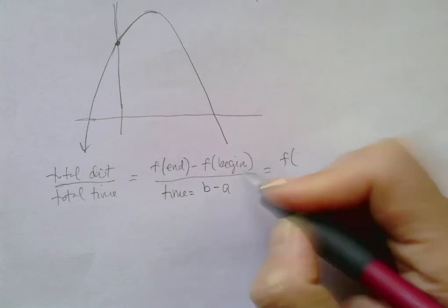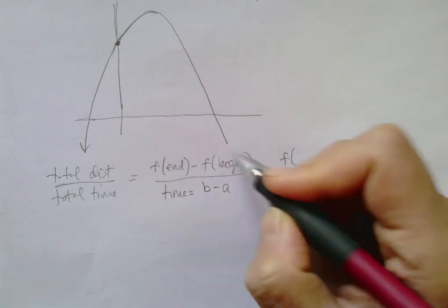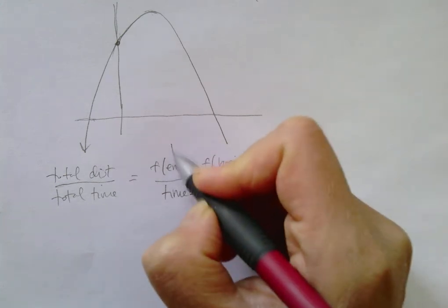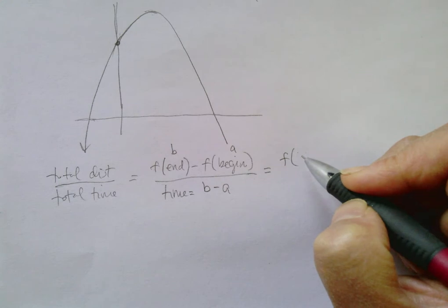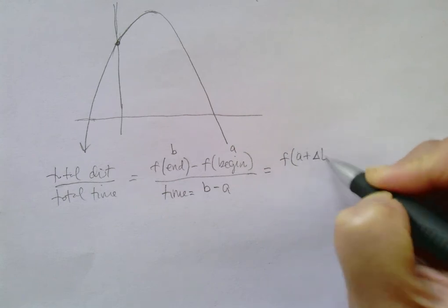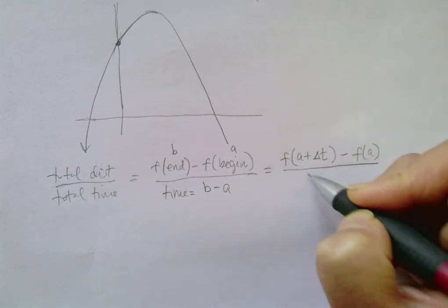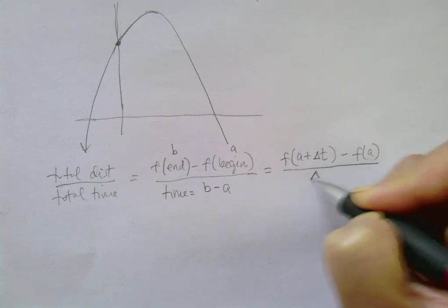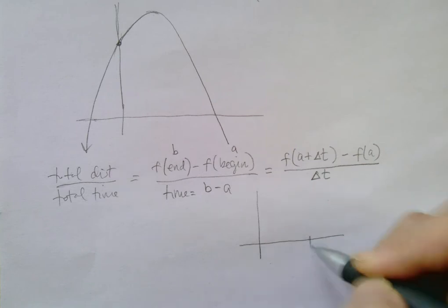...plus the interval of time that has elapsed. So let's say the end point is b and the beginning point is a. Then what we'd have is f of a plus delta t minus f of a over delta t. Okay, it's the same idea.